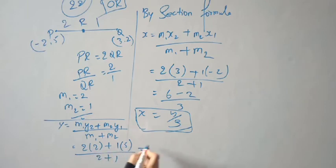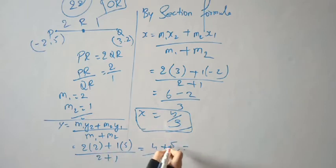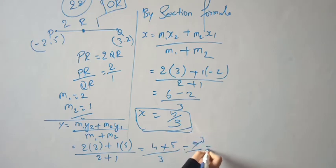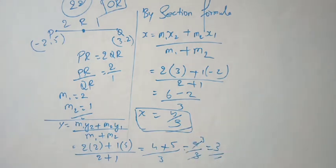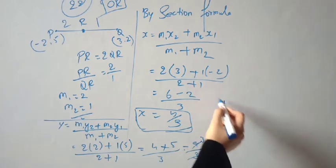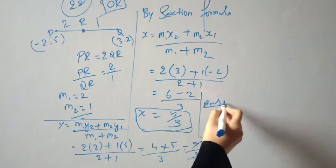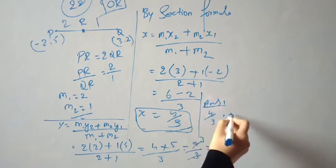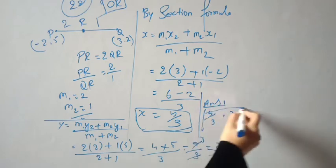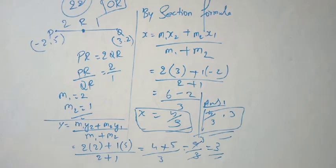For y: y = (m1·y2 + m2·y1) / (m1 + m2) = (2×2 + 1×5) / 3 = (4 + 5) / 3 = 9/3 = 3. So the x-value is 4/3 and y-value is 3. Therefore, R = (4/3, 3).